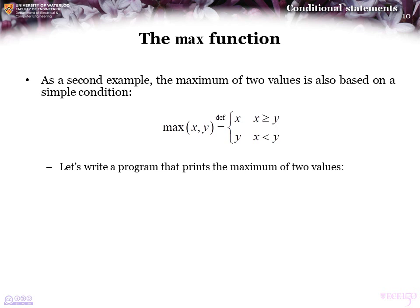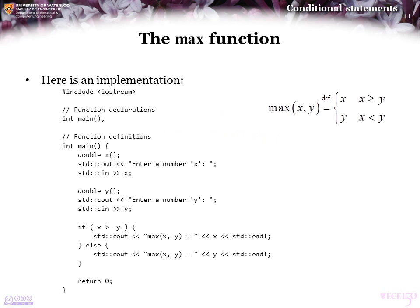Here's a second example: the maximum of two values. Given two values X and Y, the maximum is X if X is greater than or equal to Y; otherwise it is Y. In our program, we query the user for values of X and Y. In our conditional statement, if X is greater than or equal to Y, we write out that the max of X and Y is X. If that condition is false, we write that the maximum of X and Y is Y.